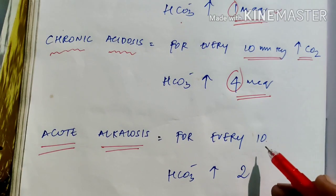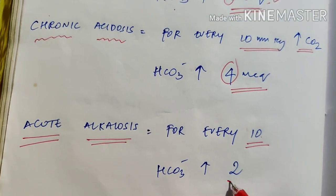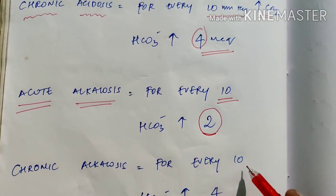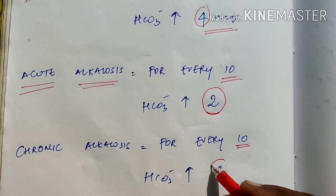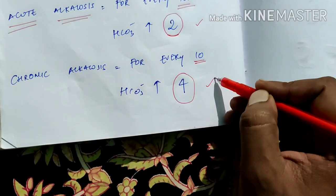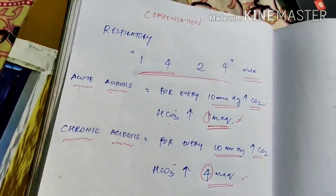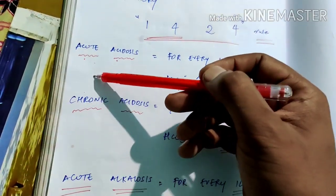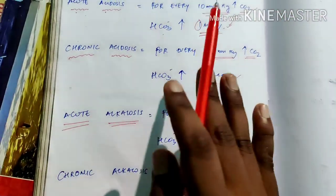In chronic respiratory alkalosis, for every 10 mmHg of CO2 change, HCO3 minus changes by 4. So the 1-4-2-4 rule covers: acute acidosis = 1, chronic acidosis = 4, acute alkalosis = 2, chronic alkalosis = 4. Remember them in order and don't mix them up.